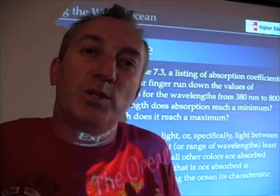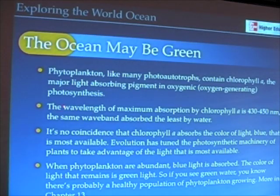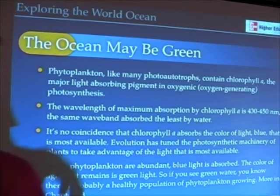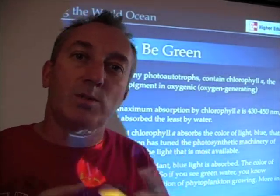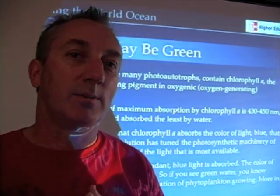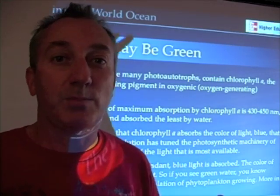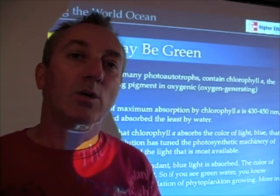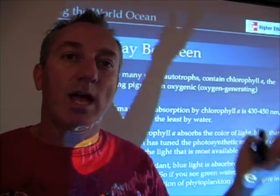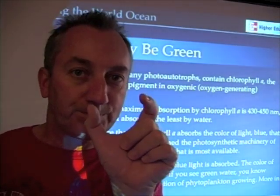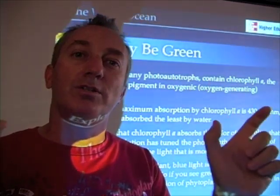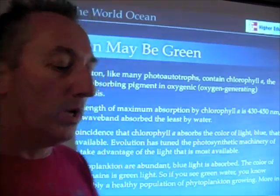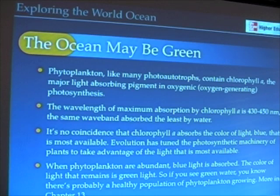In some cases, the ocean may actually be green. Why is that? It turns out that phytoplankton — these photosynthetic microscopic organisms that are the most important organisms in the ocean because they provide food, oxygen, and warmth — contain the pigment called chlorophyll. Chlorophyll is the same pigment you see in the trees, palms, and grass around your home. Because it's green, it's absorbing all other colors except green. The maximum wavelength of absorption by chlorophyll is 430 to 450 nanometers.